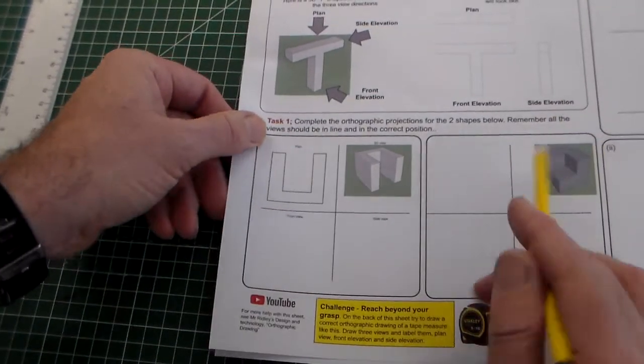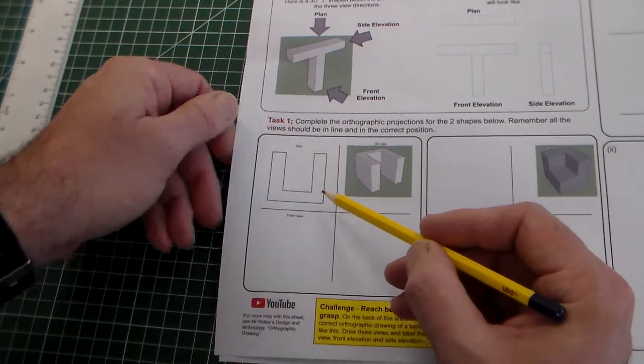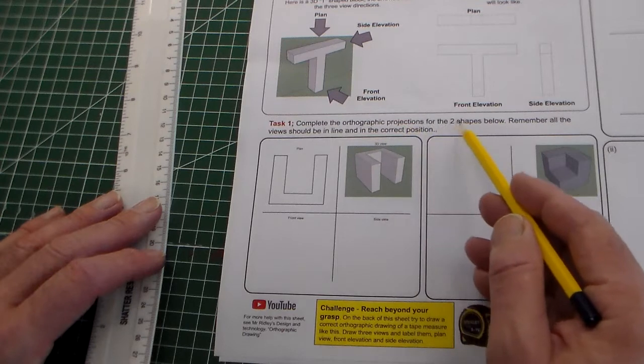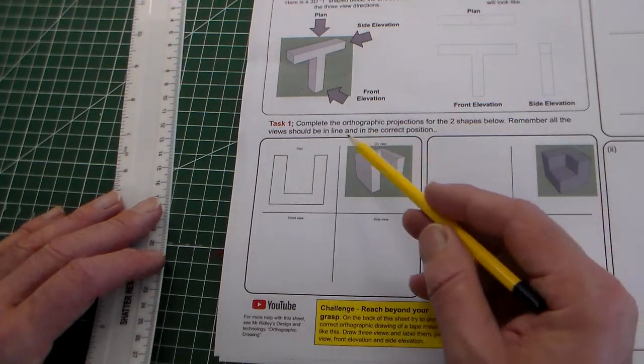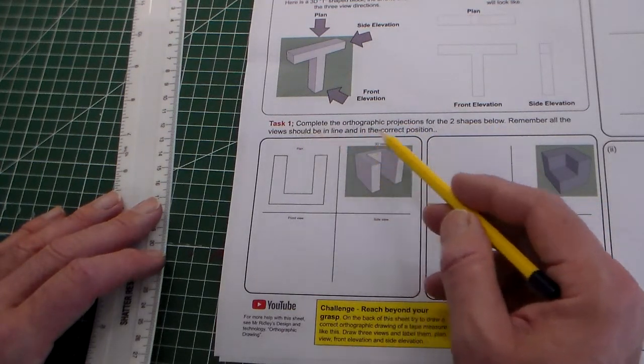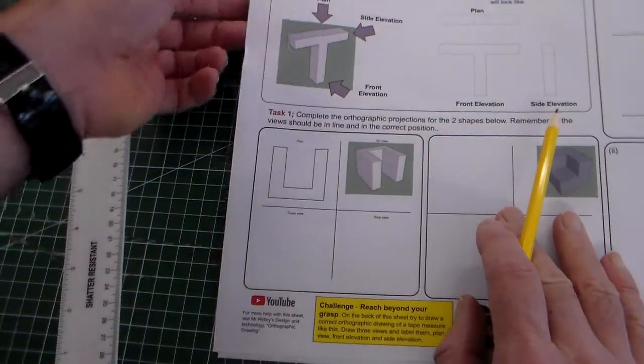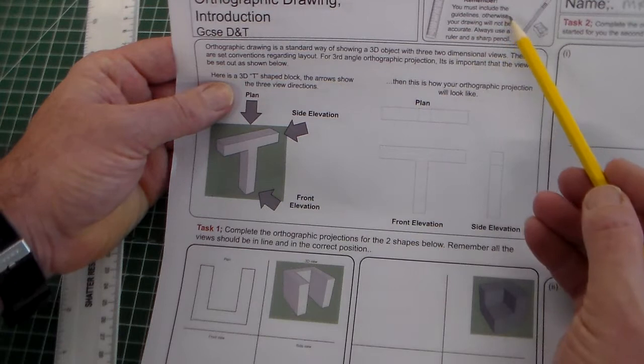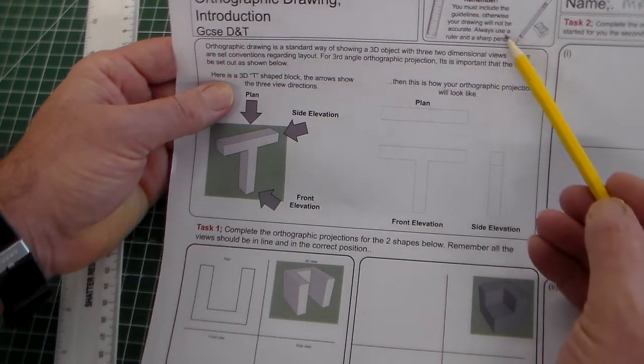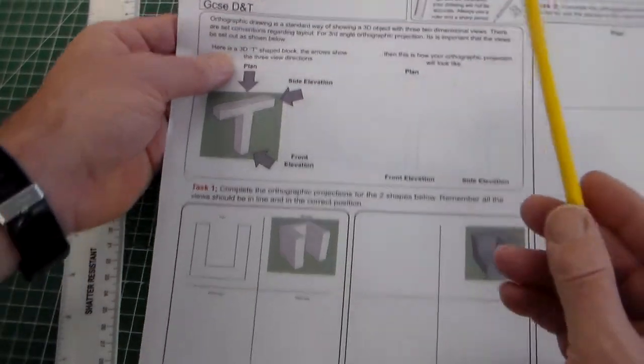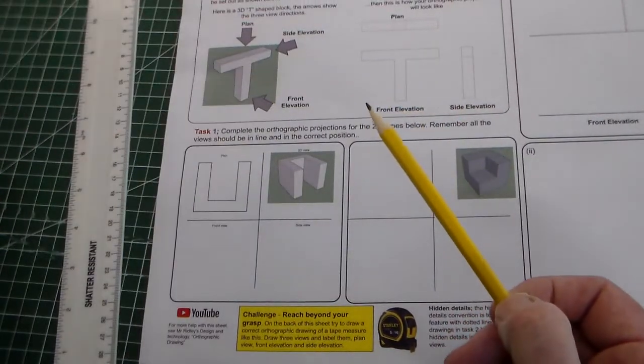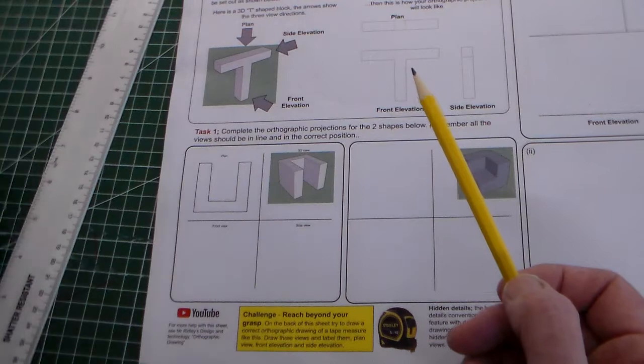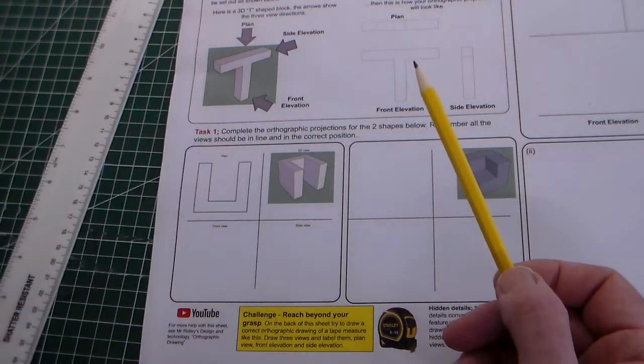So we're going to take a look at this task 1, and task 1 says complete the orthographic projections for the two shapes below. Remember all views should be in line and in the correct position. And if we take a look here, it says remember you must include guidelines, otherwise your drawings will not be accurate. Always use a sharp pencil and a ruler. You might need a rubber also and a pencil sharpener.